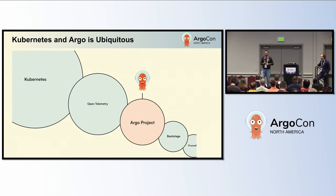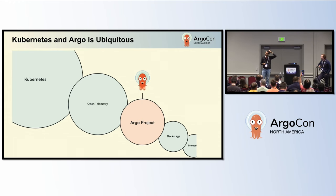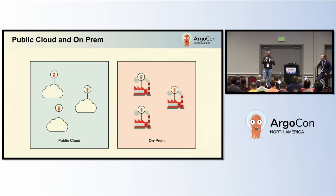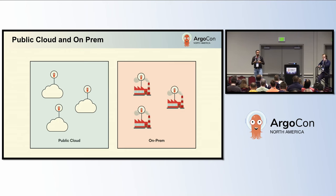We're always heads down working on things, and sometimes we fail to step back and see how much work we've actually done as a community. The fact that Argo is mentioned in the same breath as OpenTelemetry and Kubernetes signifies that Argo and Kubernetes are table stakes — meaning that when you're deploying Kubernetes, you're installing Prometheus, installing OpenTelemetry, you're installing Argo. It just becomes part of that initial installation when you're deploying cloud-native architecture.